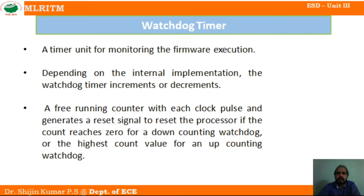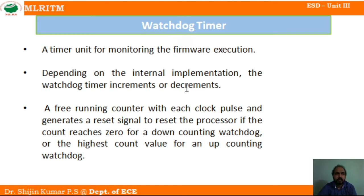We can define this watchdog timer as a free-running counter. With each clock pulse it generates a reset signal to reset the processor if the count reaches zero — that is for a down-counting watchdog. For every execution of each instruction, a fixed time is set and this watchdog timer will start counting. When the watchdog timer reaches zero and the instruction is not executed, it will generate a reset pulse.